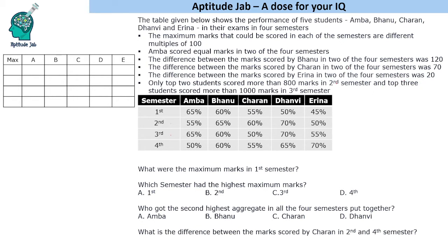If we know the marks in one of the semesters, the last point given to us is that only the top 2 students scored more than 800 marks in the 2nd semester, and the top 3 students scored more than 1000 marks in the 3rd semester. This is the statement we are going to use first. If 2 students scored more than 800 marks in 2nd semester and maximum marks are different multiples of 100, let us start with 2nd semester.